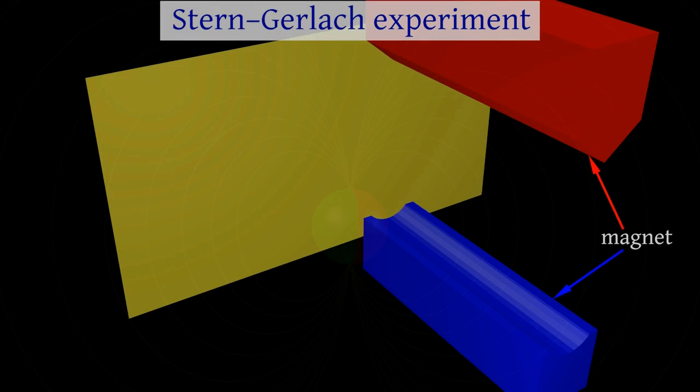The Stern-Gerlach experiment is usually used to demonstrate that electrons and atoms have spin.